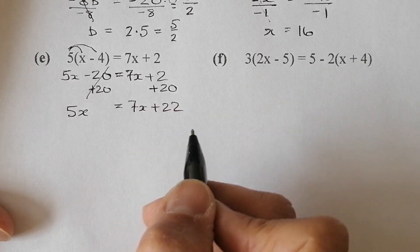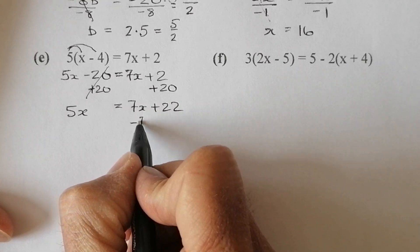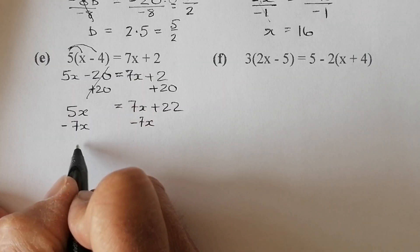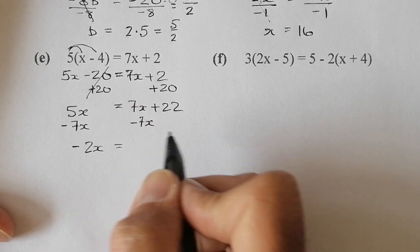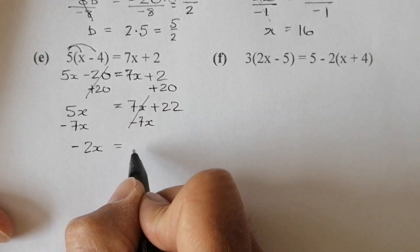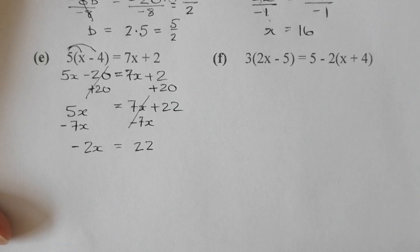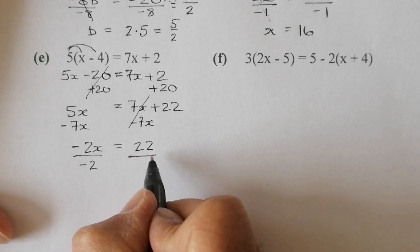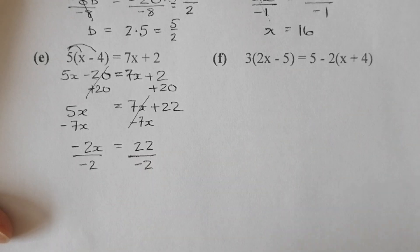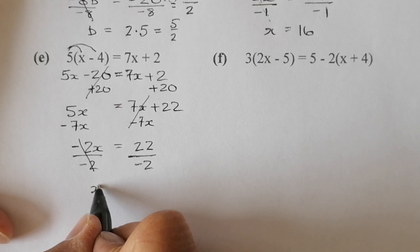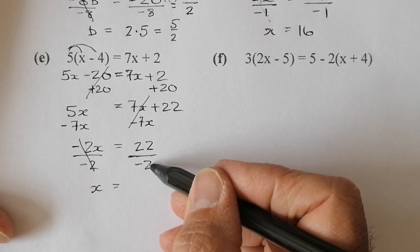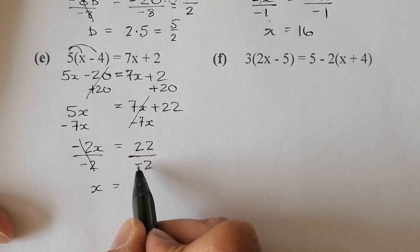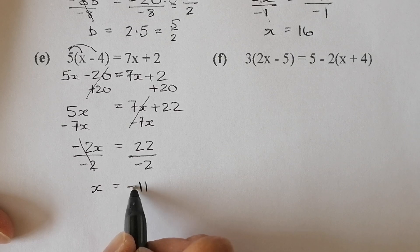I get rid of the 7x by subtracting 7x from the right-hand side and from the left-hand side — that leaves me with minus 2x on the left, and 22 on the right-hand side. I divide by minus 2 on both sides; they cancel, leaving x equals... 2 into 22 gives 11, and I've got one negative sign, so the answer is negative. x equals minus 11.